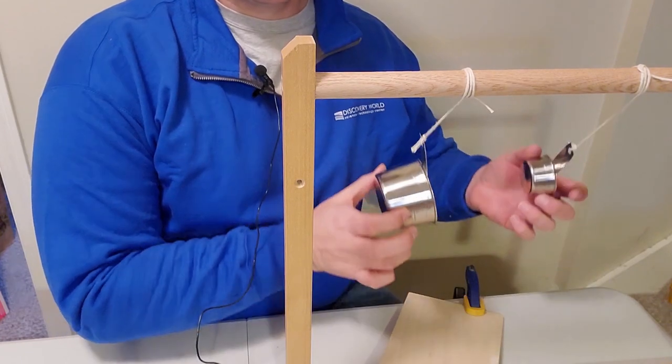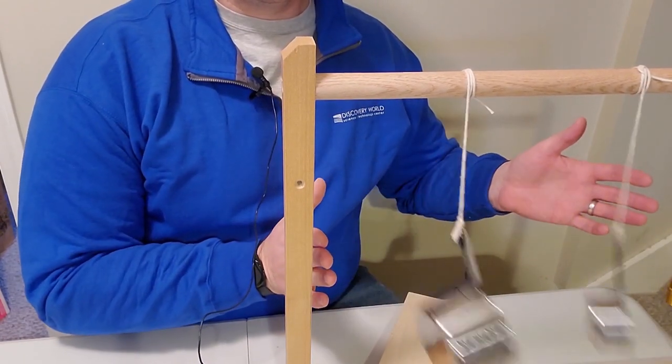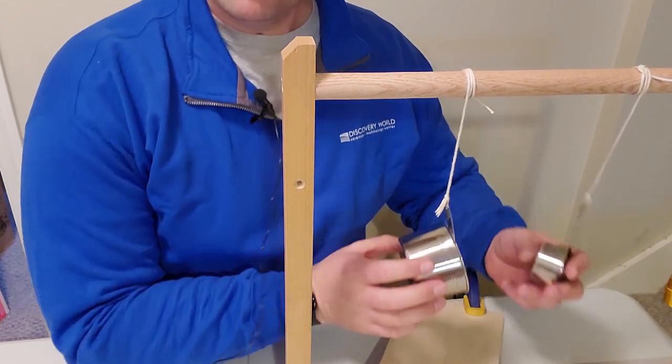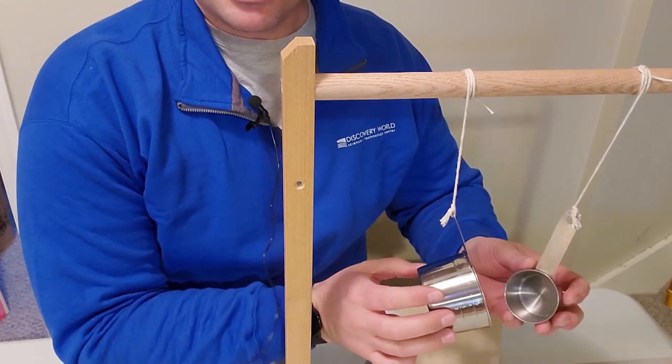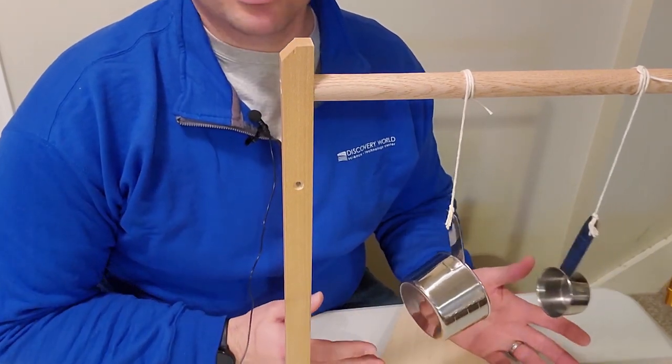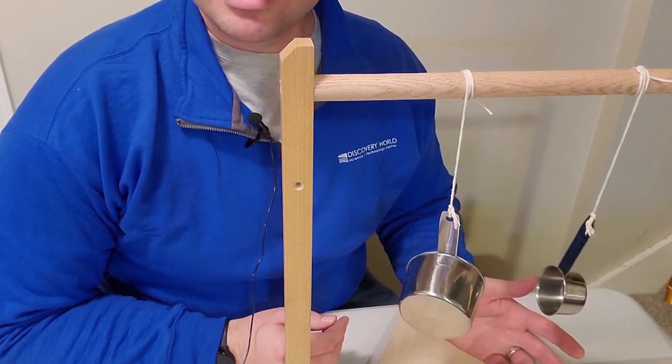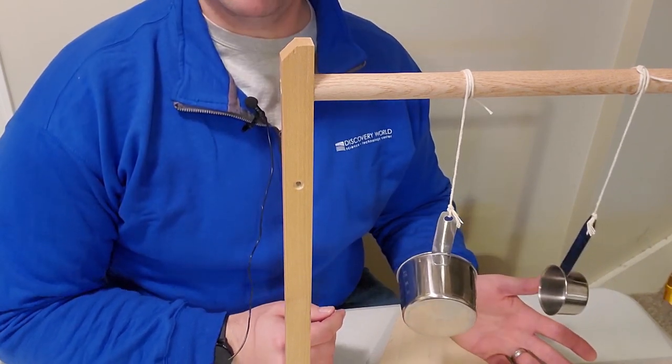So I hung them together. Even though they're two very different sizes and they have a different mass, that's how much stuff is in them, they swing at the same speed. Why do you think that might be?